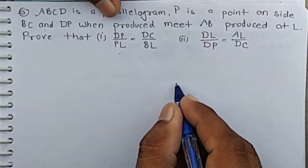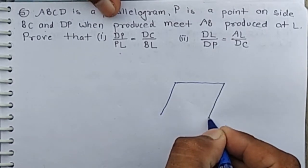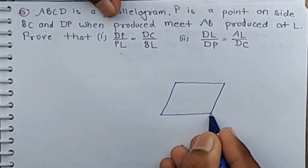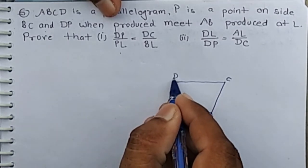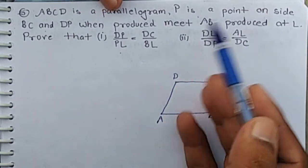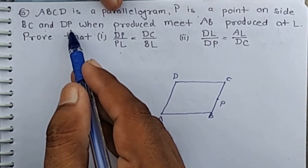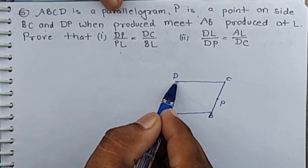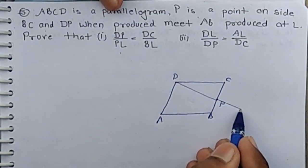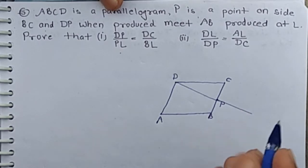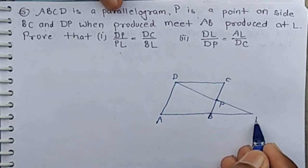Now, drawing the figure: ABCD is a parallelogram, P is a point on side BC. DP when produced meets the produced AB at point L.